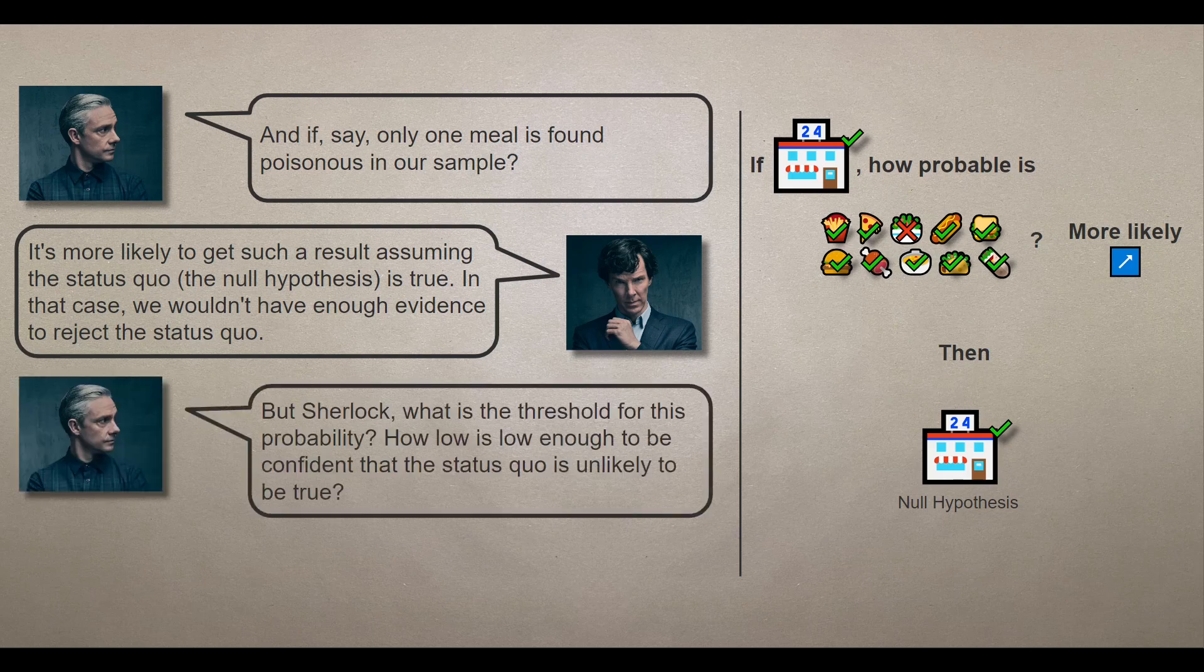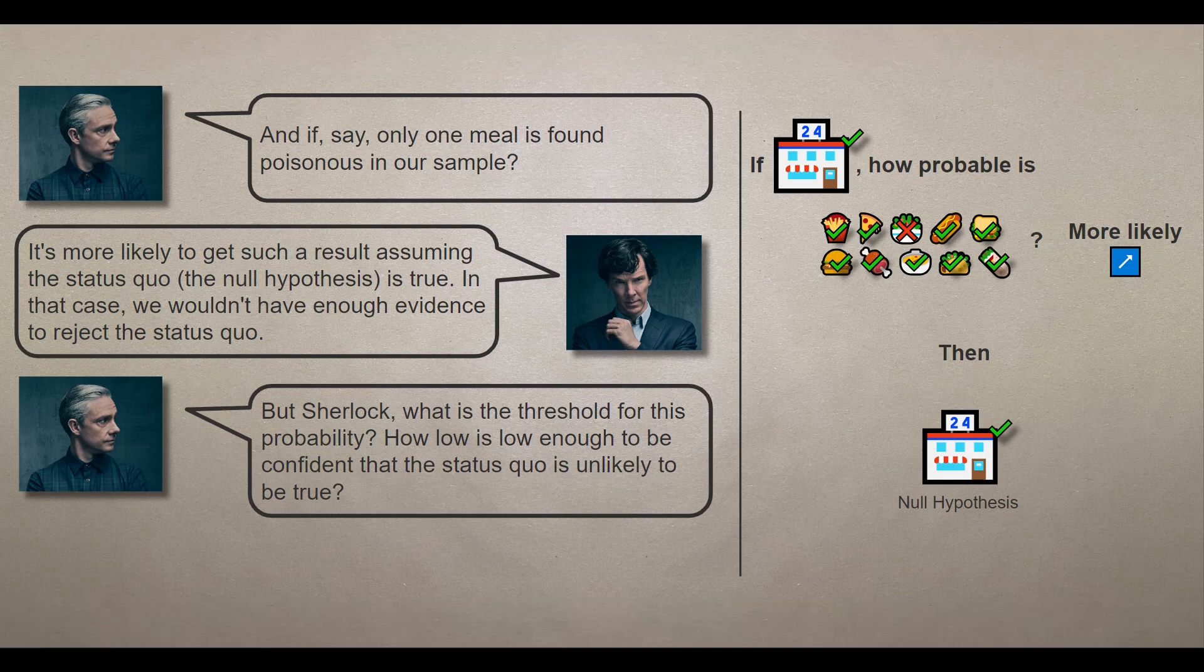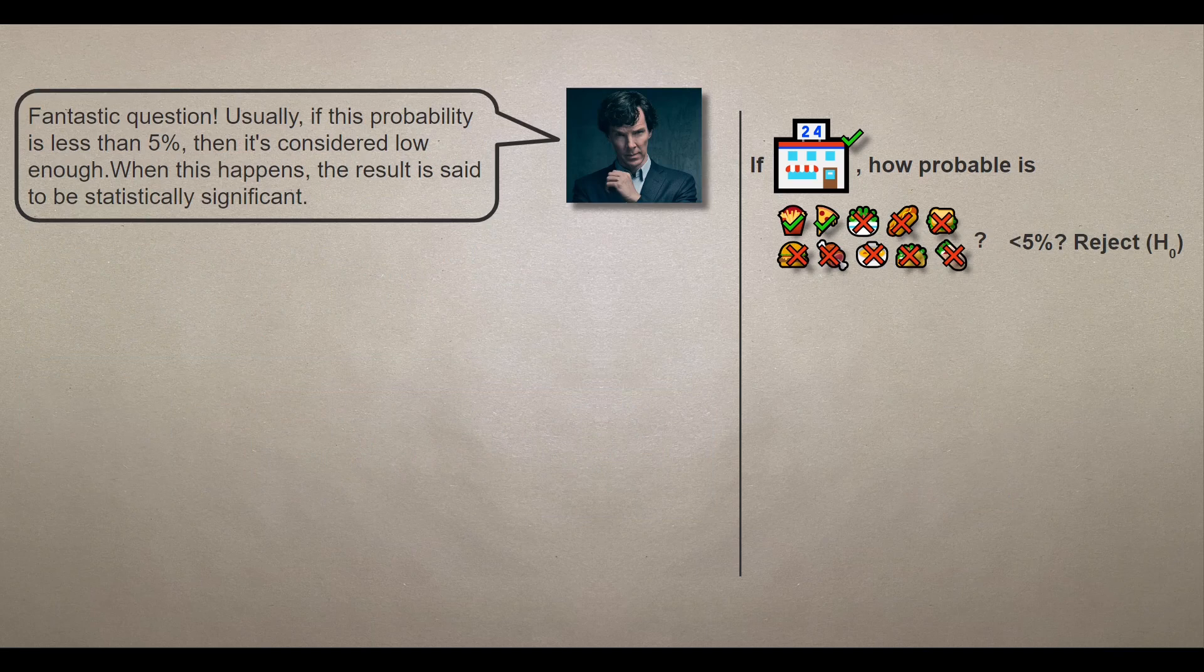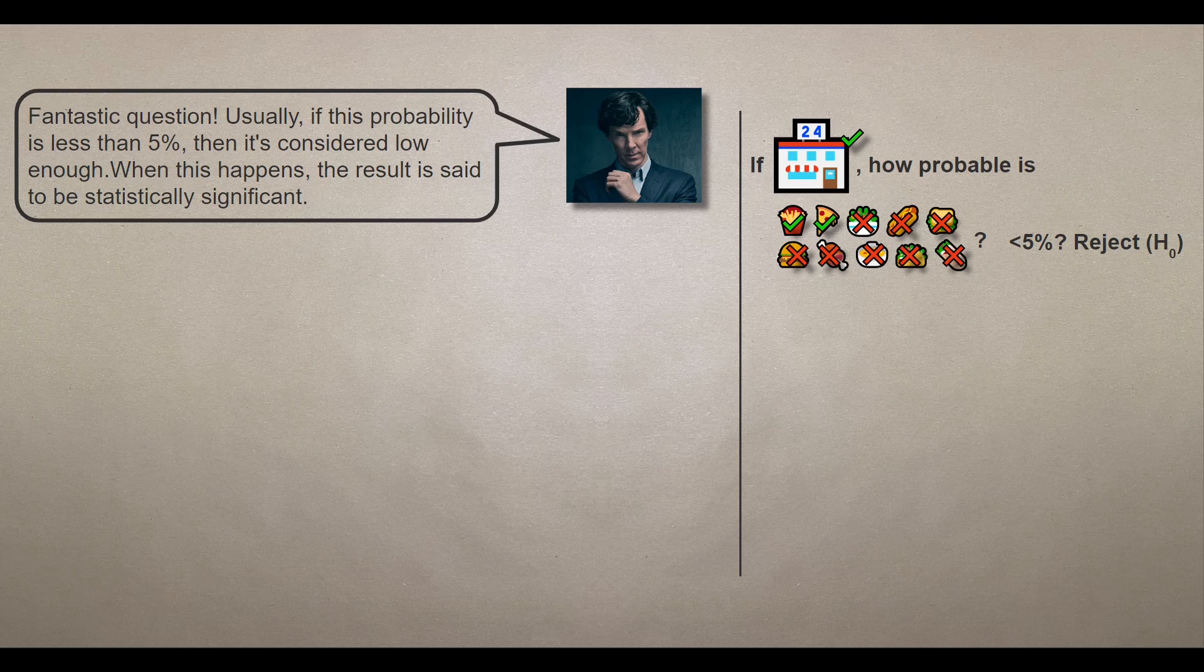But Sherlock, what is the threshold for this probability? I mean, how low is low enough to be confident that the null hypothesis is unlikely to be true? Fantastic question. Usually, if this probability is less than 5%, then it's considered to be low enough. When this happens, the result is said to be statistically significant.